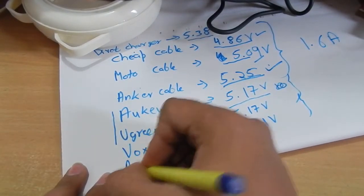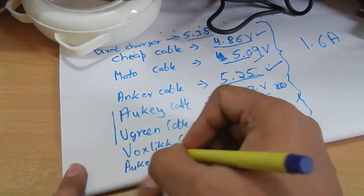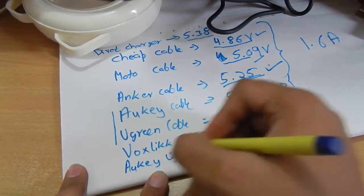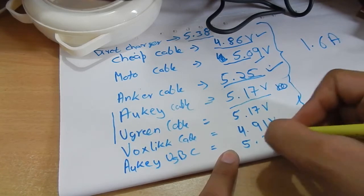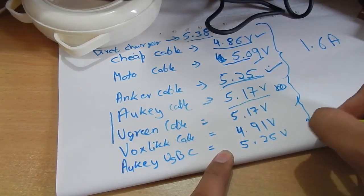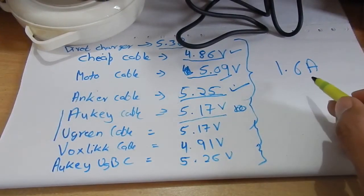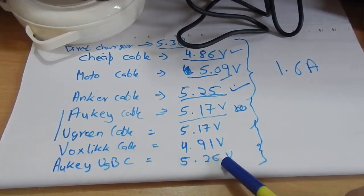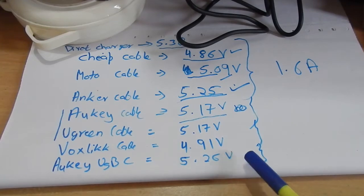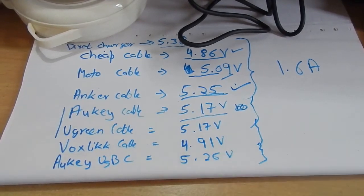Auki USB-C gave us 5.26 volt and as you can see we are drawing about 1.6 ampere. You can clearly see the difference that USB-C definitely makes a lot of difference when it comes to delivering power.